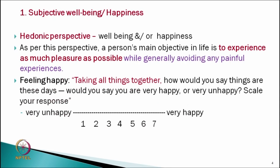So various scholars have various definitions and various ways of assessing or measuring someone's happiness. Let us know one by one all theories — how they define happiness and ways of measuring it. In this series, the first model is subjective well-being, the hedonic perspective of well-being or happiness.